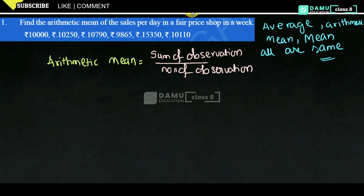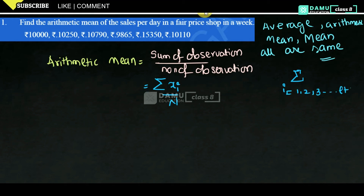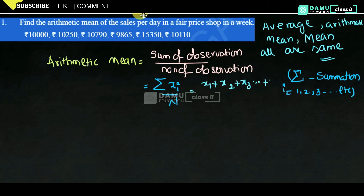How many observations are there — that is the number N. Sum means we need to add. So the sum of observations will be represented with the summation symbol. We write summation of xi divided by capital N. Here xi means x1, x2, x3, x4, x5, etc. This symbol is called summation. So the formula is: x1 plus x2 plus x3 dot dot dot plus xi, all divided by capital N.